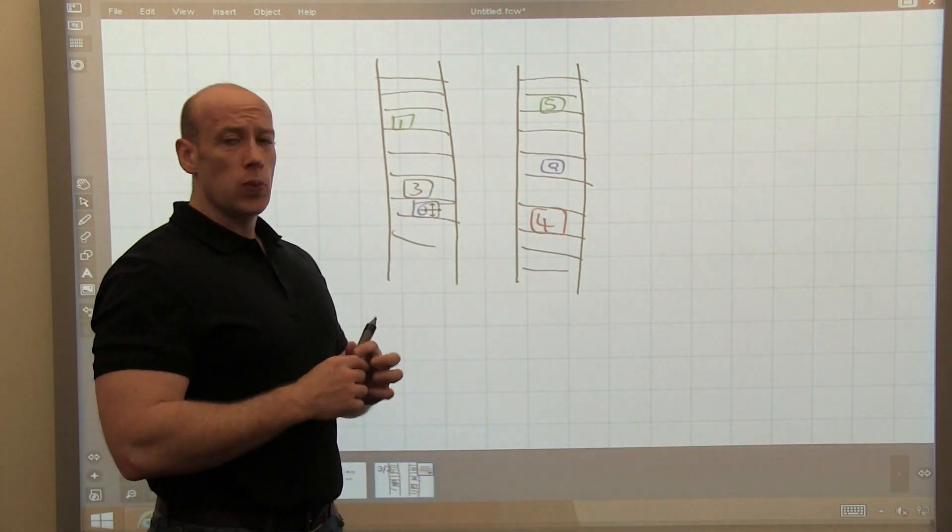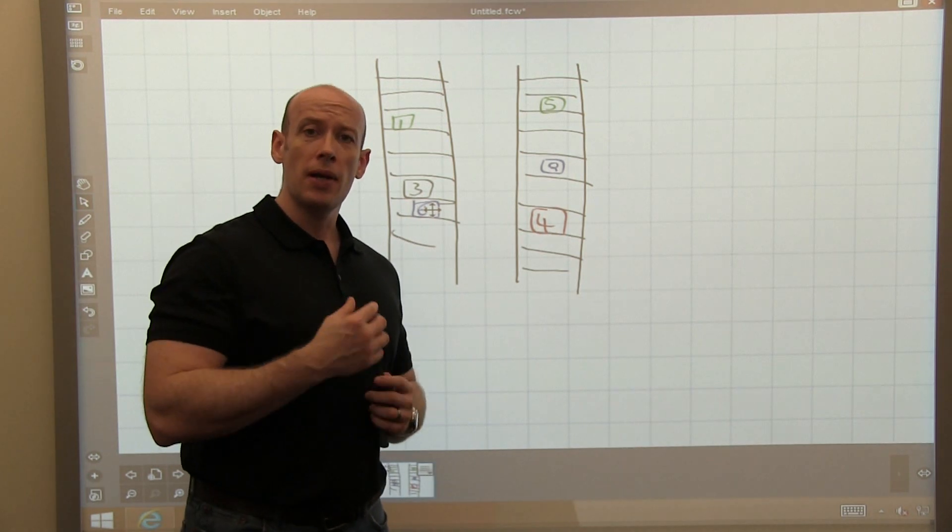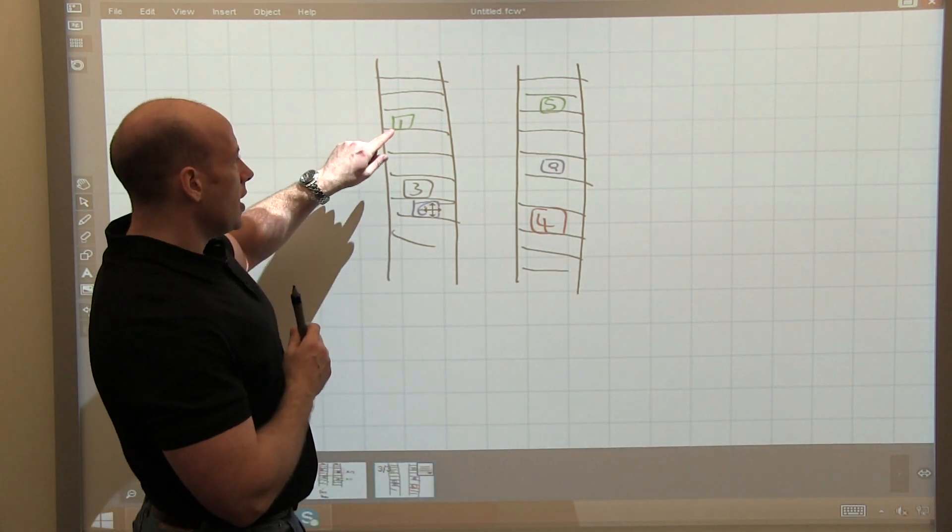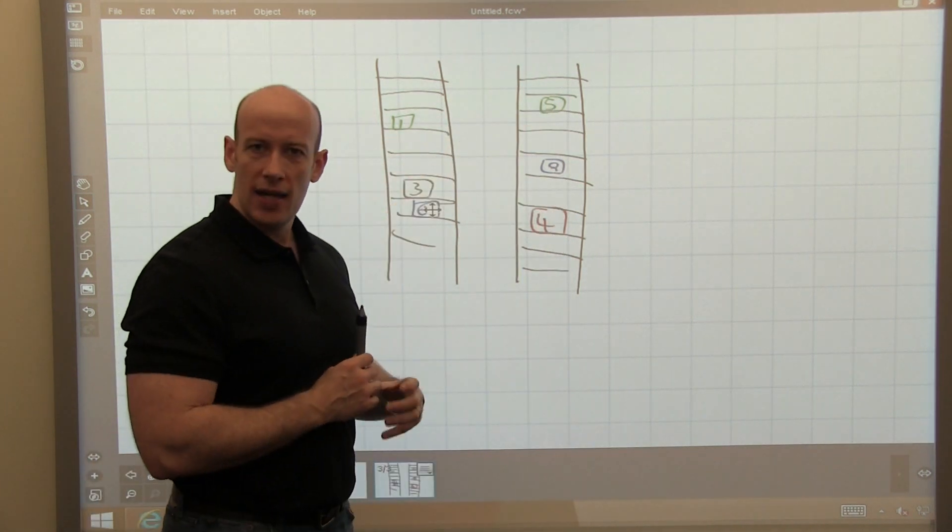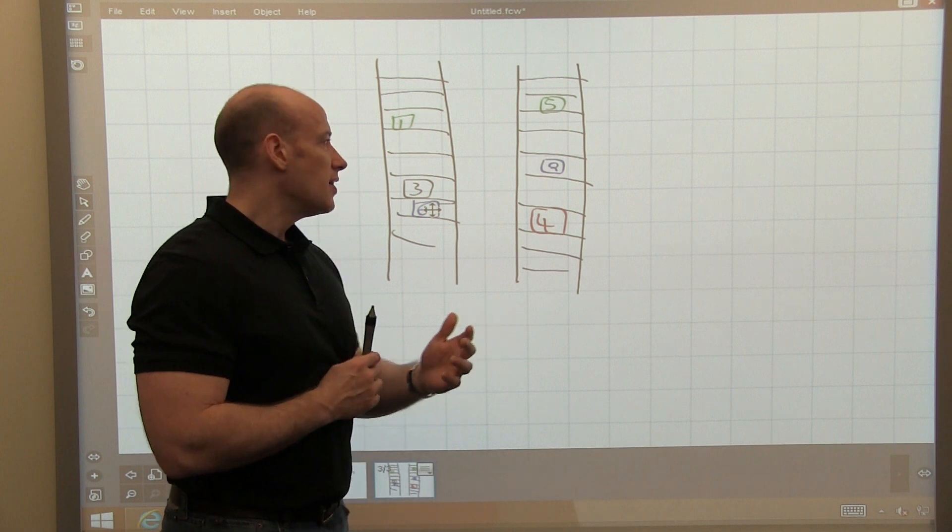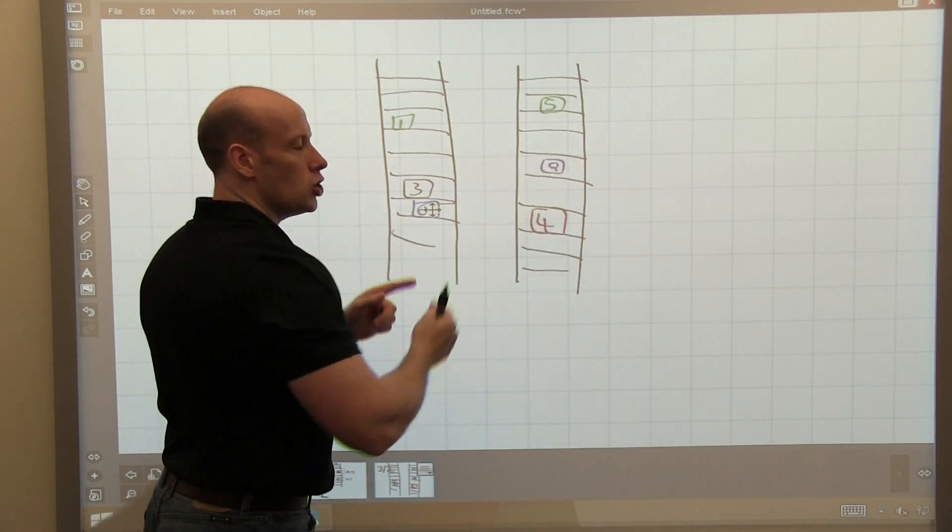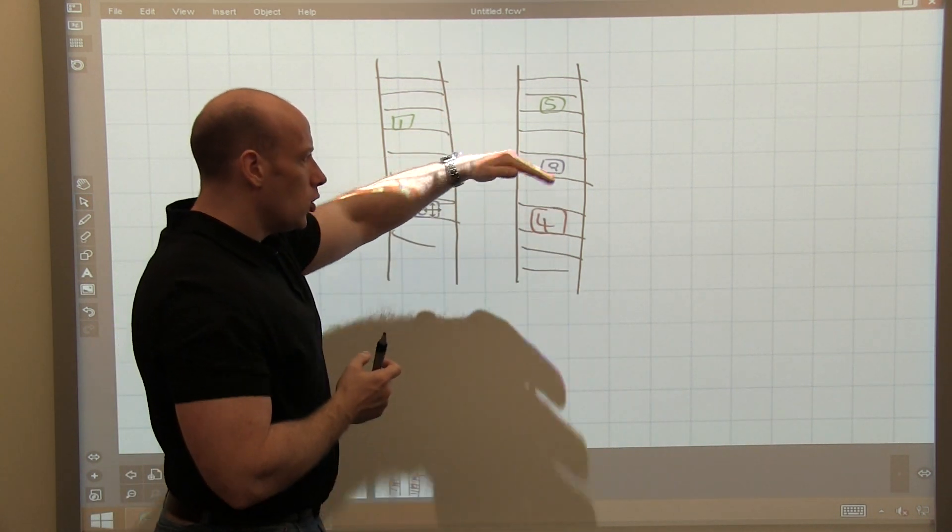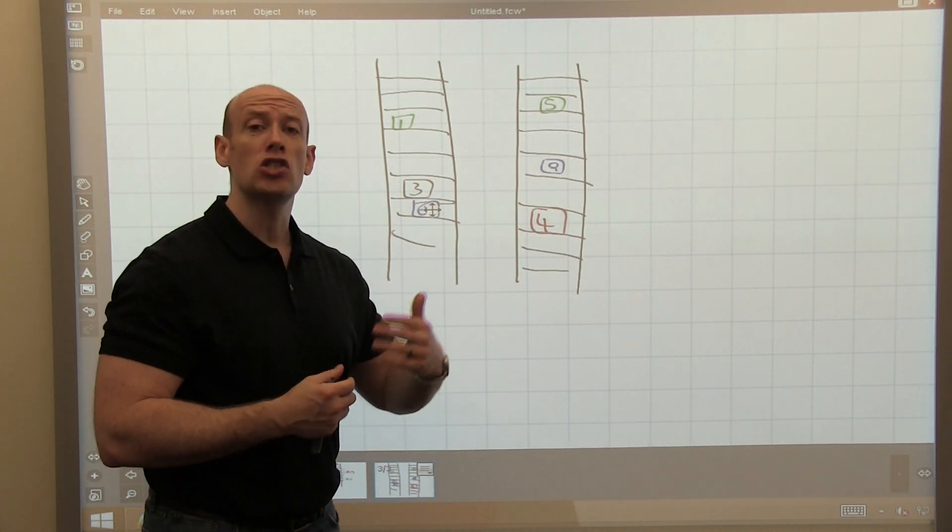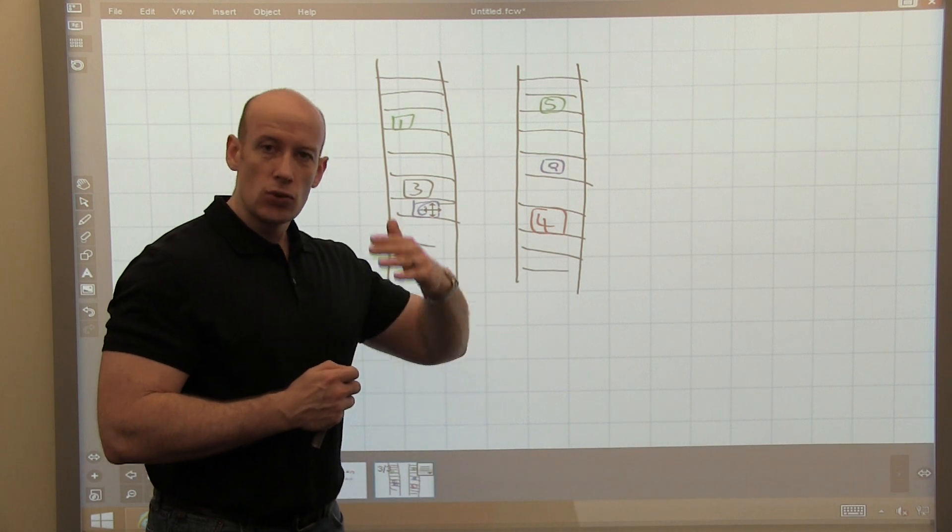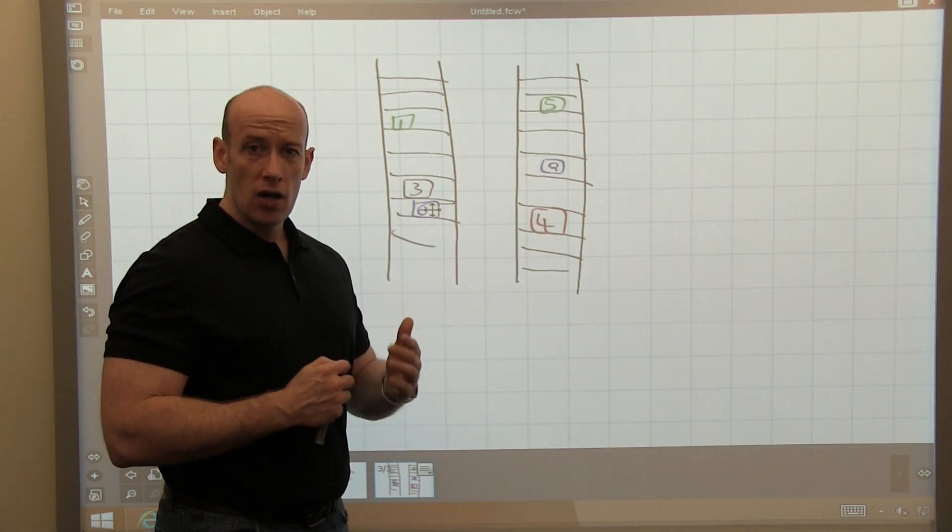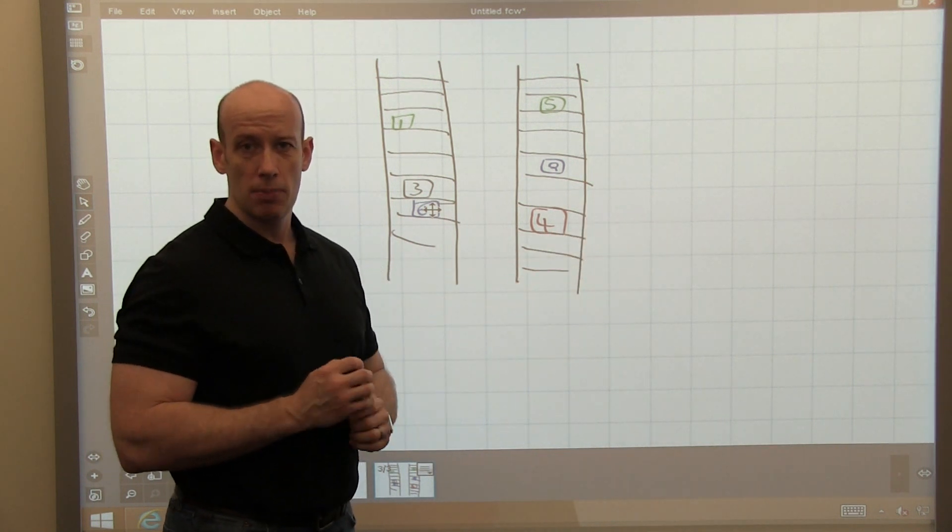But the way this works is when I roll out my application, it says, okay, well, I'm going to update update domain one first. So it would basically shut down instances one and five in this case. Update them to the new version. Once that's finished, then it would go and shut down update domain two. But you notice I'm only losing a quarter of my VMs at any one time. Obviously, if I had 20 update domains, I'd only lose a 20th at any one time. So it enables me to very granularly control kind of the rollout as I push out new versions of my application in PaaS.